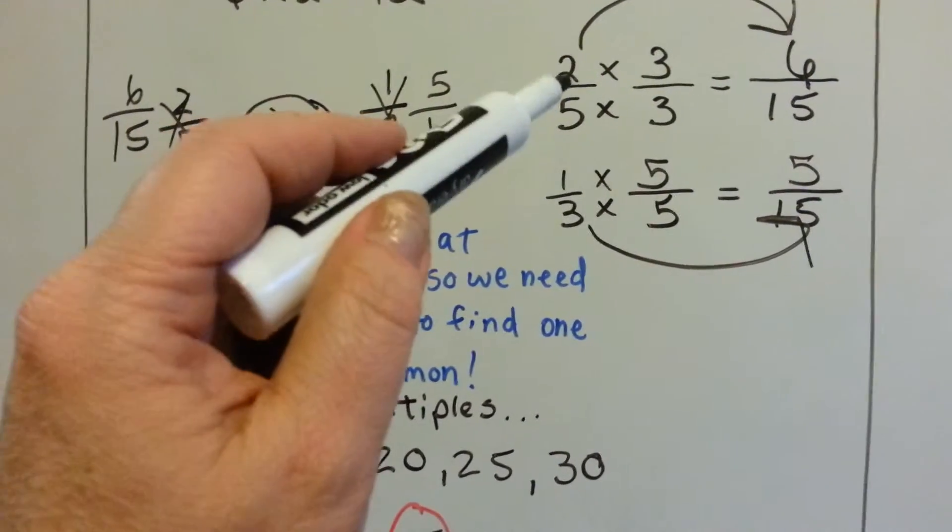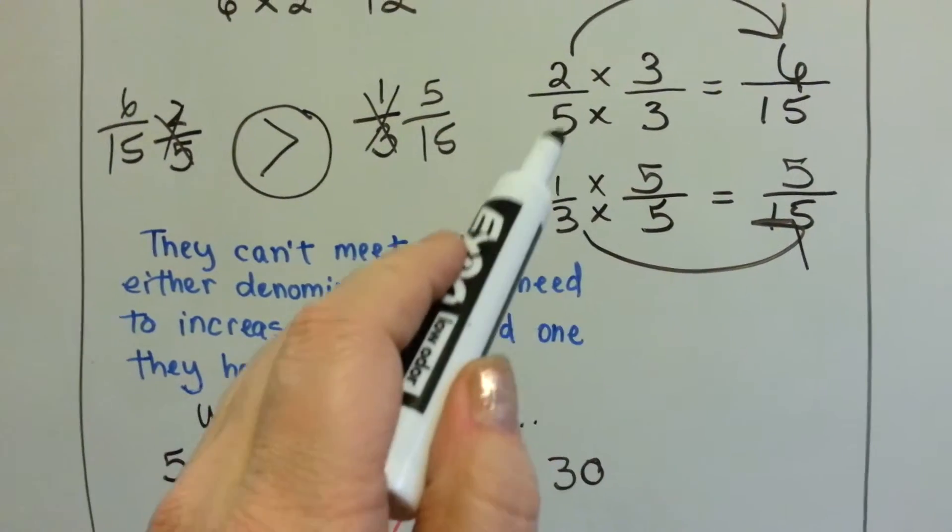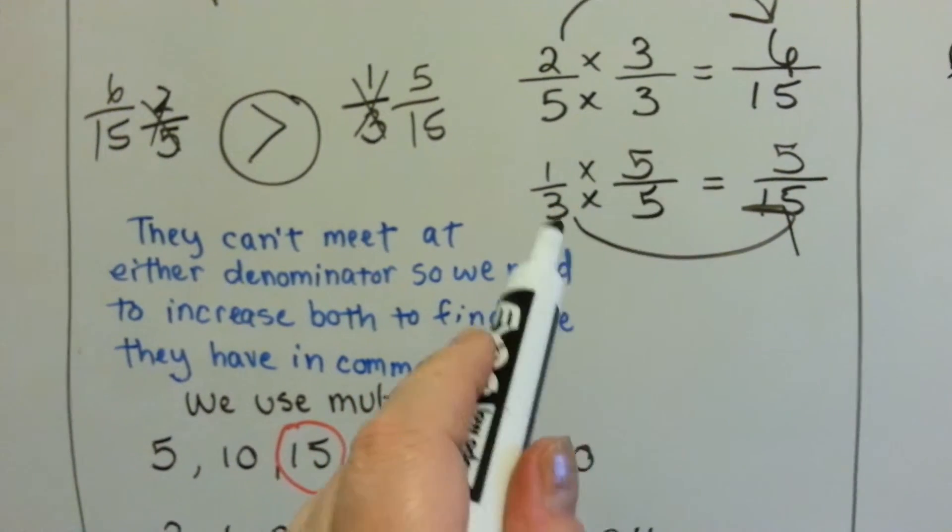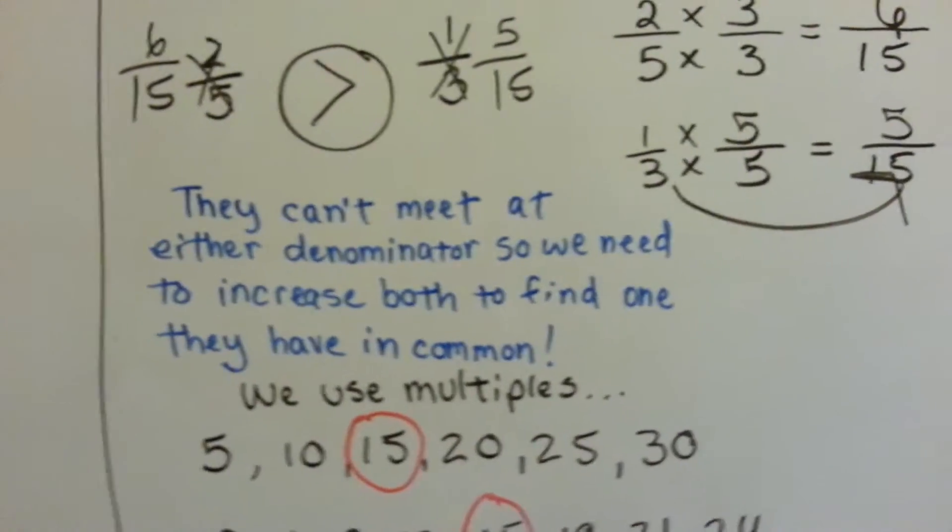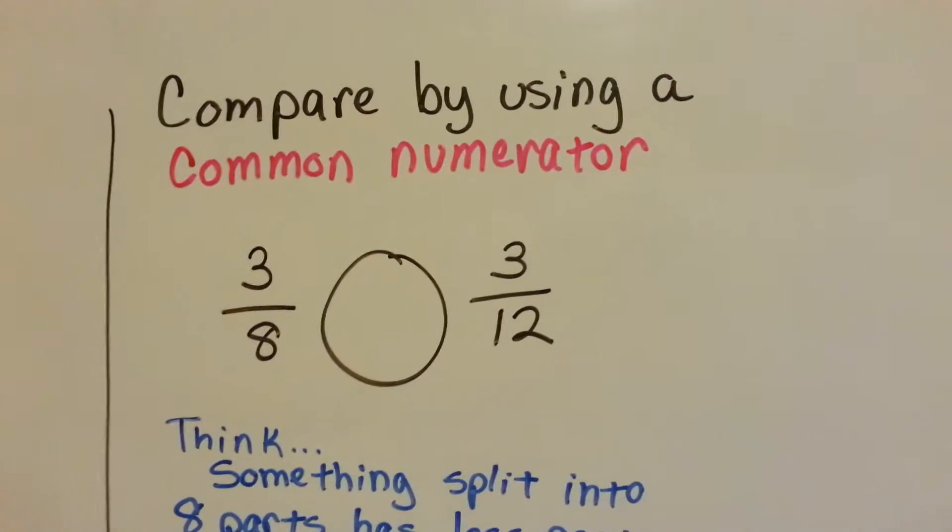Now, the reason that we didn't multiply this number by 3 or that number by 5 is because 5 is already closer to 15, so he didn't have to go as far. The 3 is farther away from 15, so he had to go a little farther, so he needed a bigger number to multiply to. Now, let's look at what happens when we compare numbers by using a common numerator.